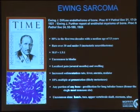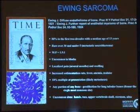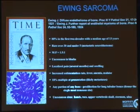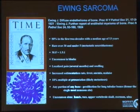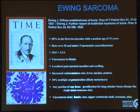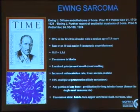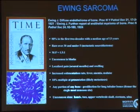Ewing sarcoma was first delineated by Professor Ewing back in 1921. He actually called it diffuse endothelioma of bone at that time. Ewing sarcoma occurs really in the first two decades of life. It's a little bit younger than osteosarcoma. Rarely do you see Ewing sarcoma above the age of 30.